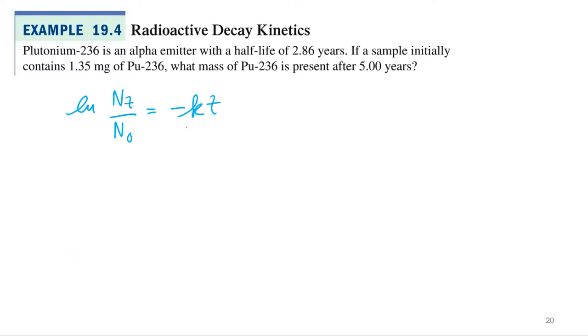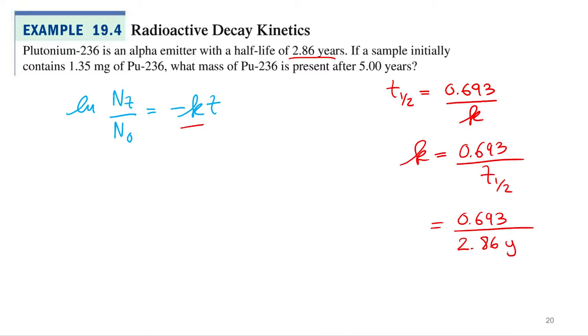We are also going to need that rate constant. It gives us the half-life, and so we've got half-life equals 0.693 over the rate constant, or we just flip it, rate constant equals 0.693 over the half-life. 0.693 over, what's the half-life? 2.86 years.